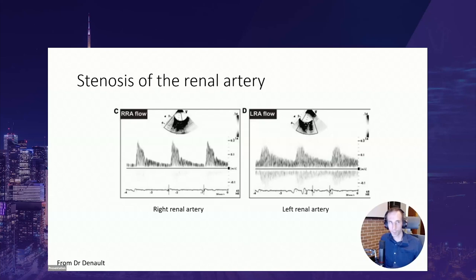Any obstruction in the renal artery can also affect the arterial Doppler waveform. This is a case where an aortic prosthesis was being installed for a type 2 aortic dissection. On the left is the right renal artery waveform with a high resistive index, likely due to the patient's baseline characteristics. On the right is the left renal artery waveform, which was being partially obstructed by the aortic prosthesis — causing a blunted waveform and a paradoxically lower renal resistive index compared to the contralateral side.